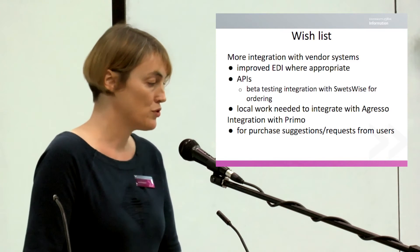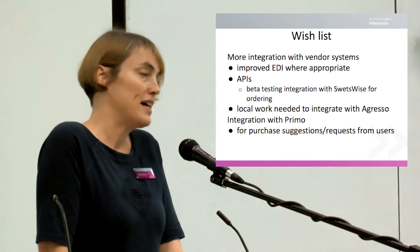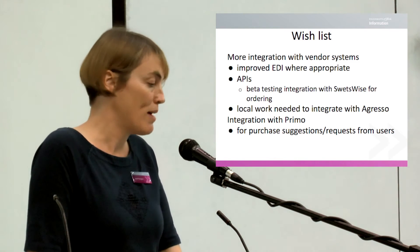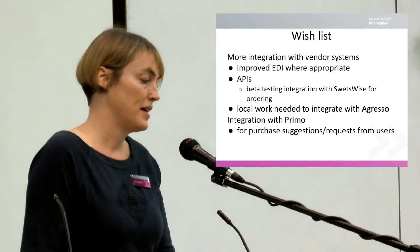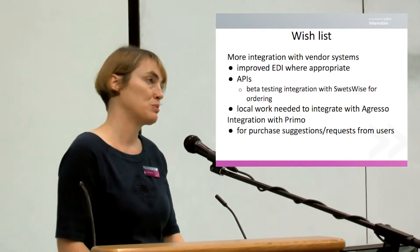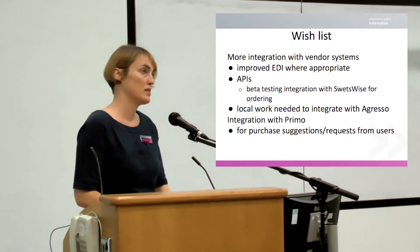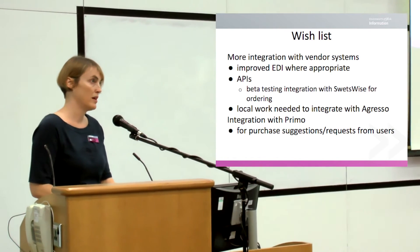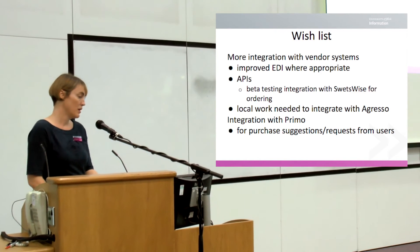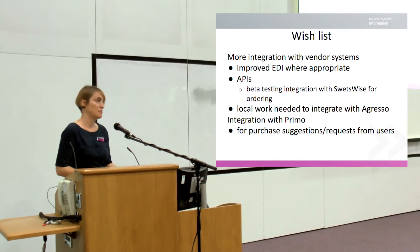Our wish list for ordering is more integration with vendor systems — improved EDI functionality where appropriate and more APIs. For example, we've been beta testing integration with Swetswise which would allow us to order a new subscription on Swetswise and have those details transferred into Alma, including Swets order numbers. Our order record, created automatically by that process, would send back our order number into Swetswise. We've been doing some beta testing around that.